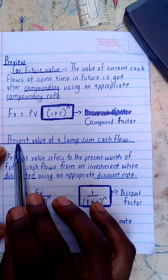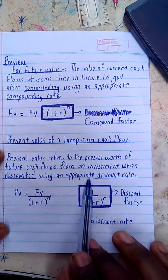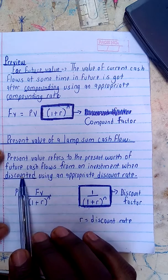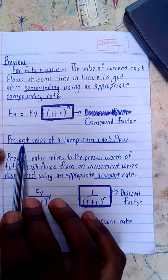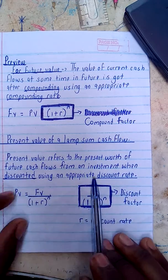When you are determining the present value, we look at things that are being discounted. When you want to find the present value, we discount.